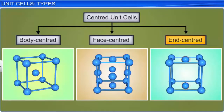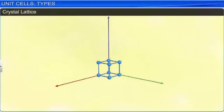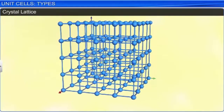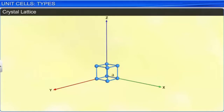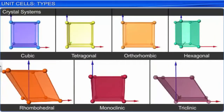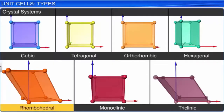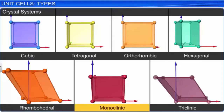A three-dimensional crystal lattice is generated by the translation of lattice parameters A, B, and C. Based on lattice parameters, we have seven crystal systems, namely cubic, tetragonal, orthorhombic, hexagonal, rhombohedral, monoclinic, and triclinic.